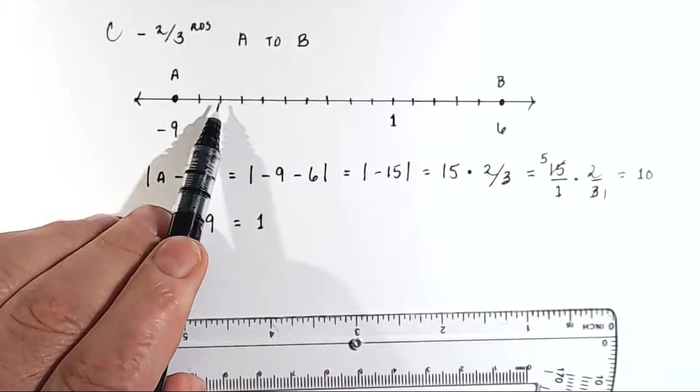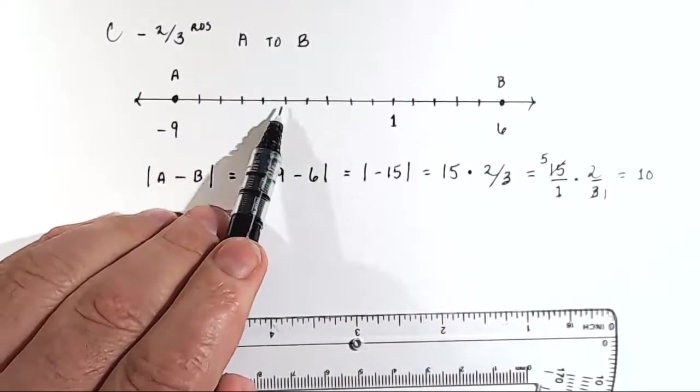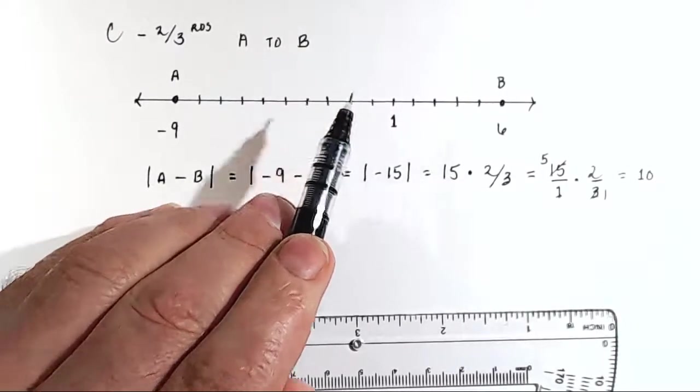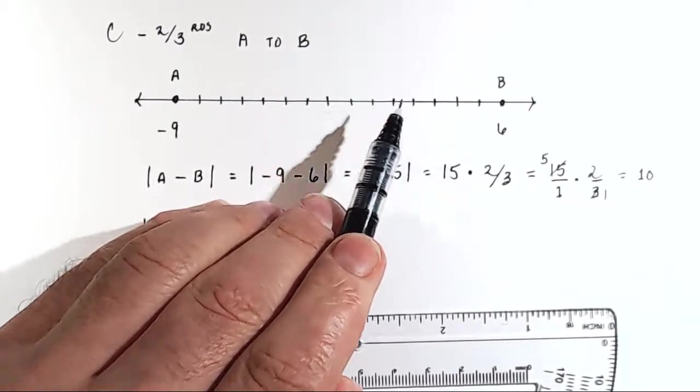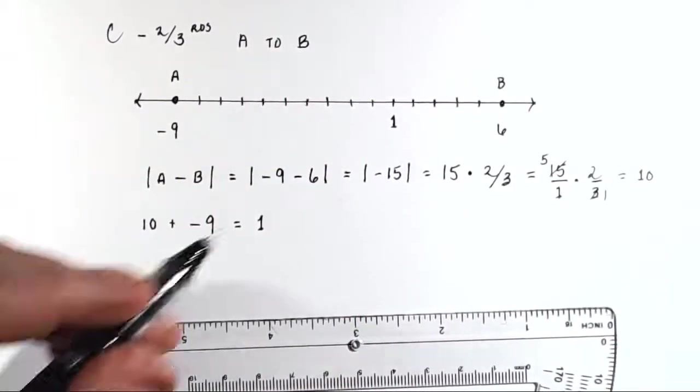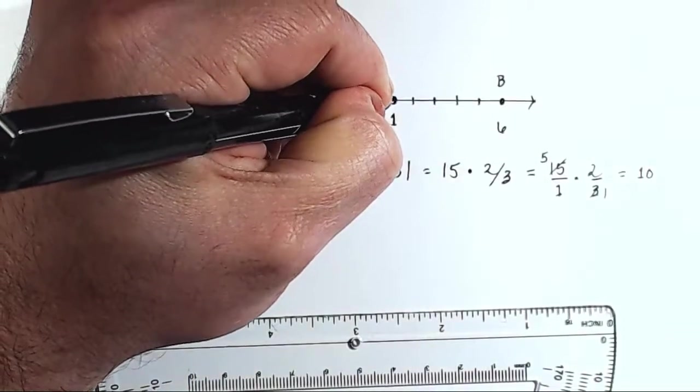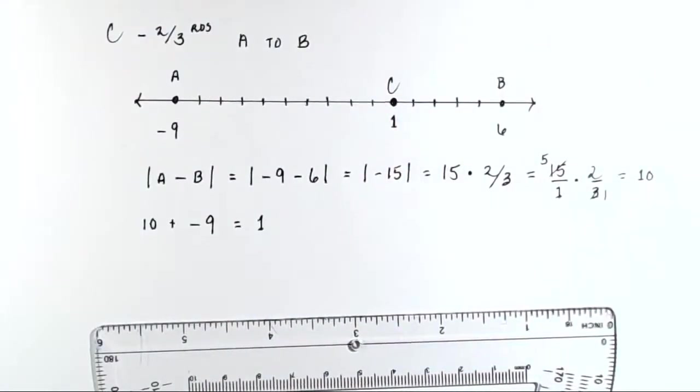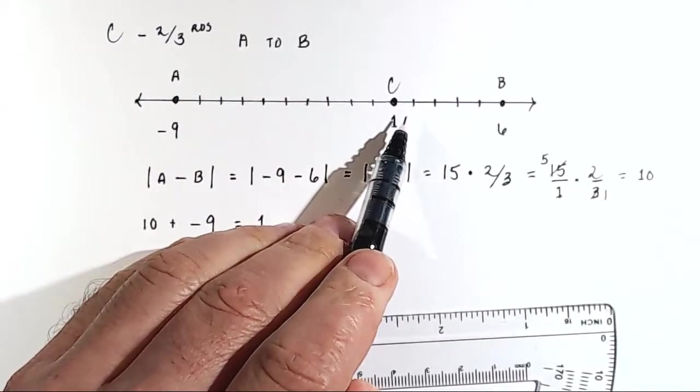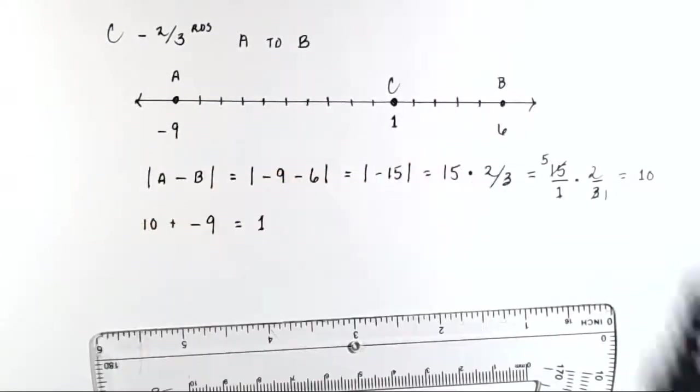So that's negative 8, negative 7, negative 6, negative 5, negative 4, negative 3, negative 2, negative 1, 0, 1. So this is the position of point C, which lies exactly two-thirds the distance from A to B.